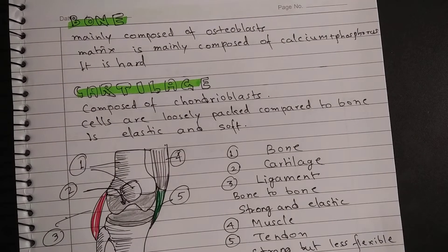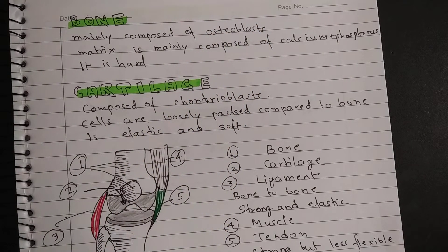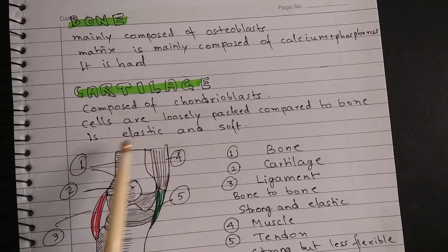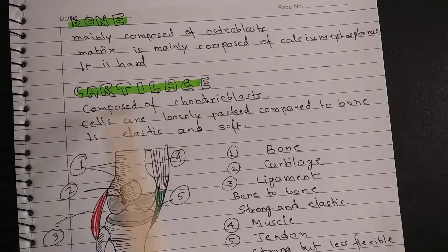Bone is a hard tissue mainly composed of osteoblasts, which are the cells of bone tissue. The matrix of bone is composed of calcium and phosphorus. Bone forms the main skeleton — the bones of the hands, ribcage, vertebral column, skull, etc. Cartilage is elastic and softer than bone; cells in cartilage are more loosely packed compared to bone, and the cells are called chondroblasts.